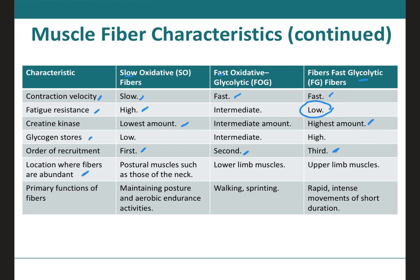Regarding the location and function of these fibers: SO fibers are important for maintaining posture, so they're located on your back and neck. Fast oxidative glycolytic fibers are found mainly in the lower limbs — these are for walking and sprinting. The upper limbs contain mainly fast glycolytic fibers, which work for rapid, intense movements that last a short period of time, like lifting weights, for example.